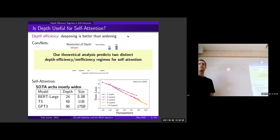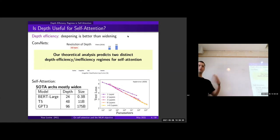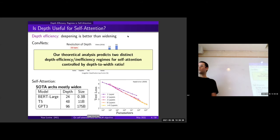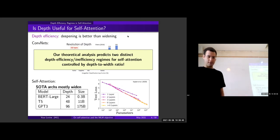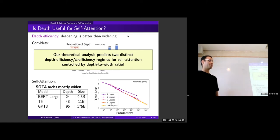What we derive is that self-attention does exhibit depth efficiency — classical and even strong depth efficiency — but only up to a certain point. Adding layers is very good and really increases the power of the network, until a certain point where it doesn't really matter if you widen or deepen. That point is logarithmic in the width — in the dimension of the representation. So we establish a depth inefficiency regime of self-attention, which in our view seems to explain what we see in experiments.